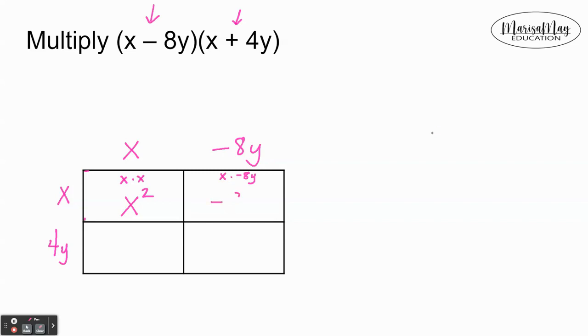Bottom left, we multiply x on top times 4y on the side, which gives 4xy. Bottom right, we multiply 4y on the side times negative 8y on the top, giving negative 32y². Remember, the box is just an organization tool, so I'm going to pull the terms out from inside the box.